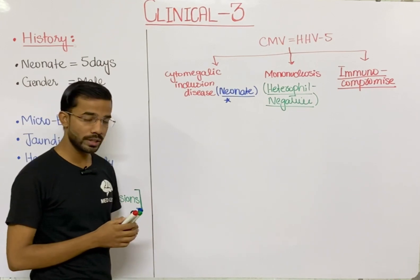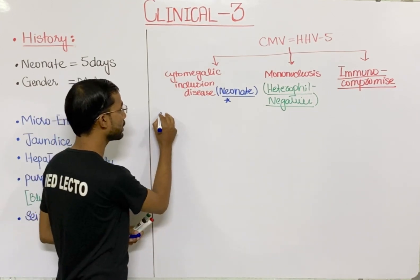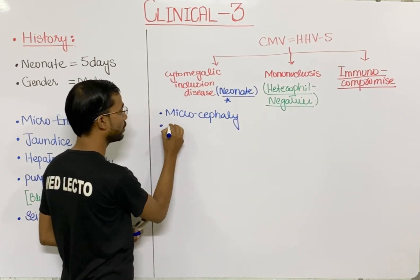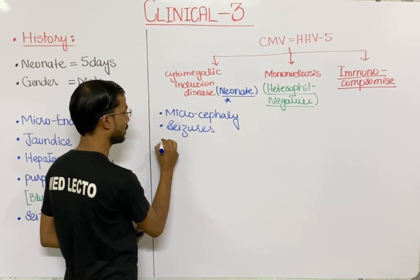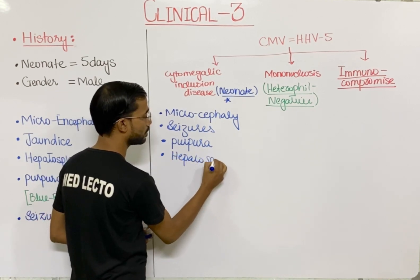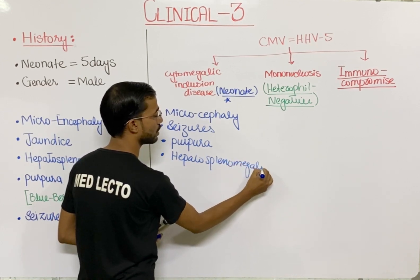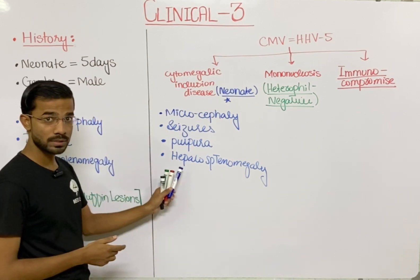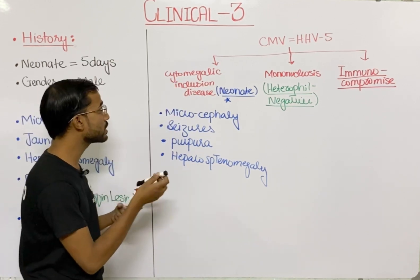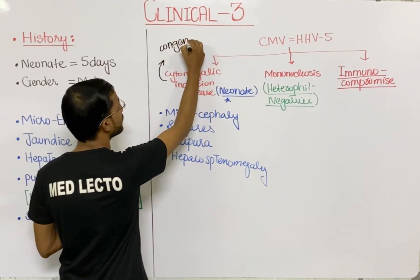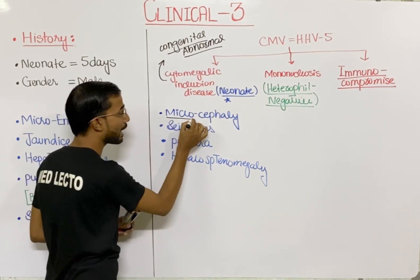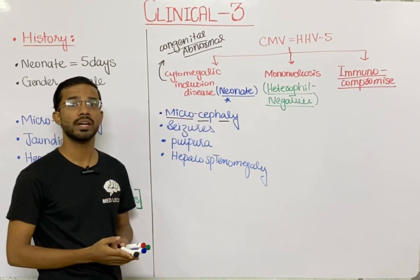In cytomegalic inclusion disease, the symptoms seen in neonates include microcephaly (small head), seizures, purpura, and hepatosplenomegaly. In cytomegalic inclusion disease, you will mostly see congenital abnormalities. Microcephaly is an example of a congenital abnormality in the neonate.